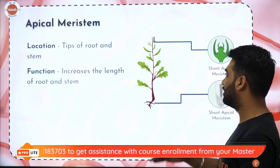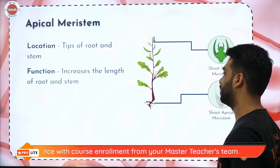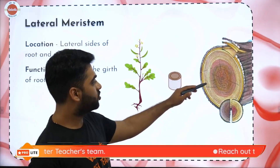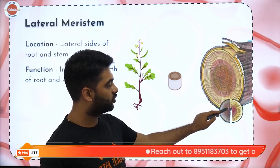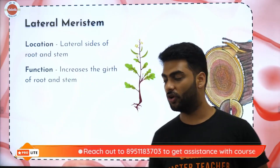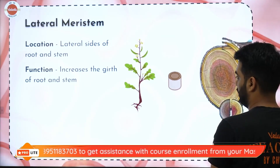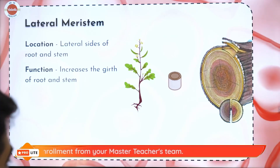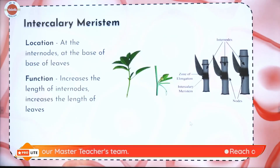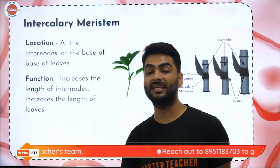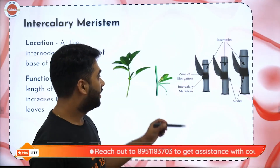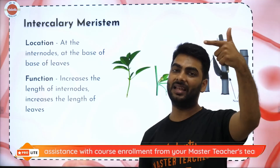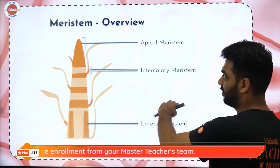Apical meristem is located at the tip of the root and the shoot — it increases the length of the root and the stem. Lateral meristem is on the lateral sides — it increases the girth of the root and the stem. The plant has grown wider because of lateral meristem. Intercalary is present between the nodes, at the internodes and at the base of the leaves — it increases the length of the internodes and increases the length of the leaves. So intercalary increases the growth of the leaf and the length of the nodes. Those are the three types of meristematic tissue: apical, lateral and intercalary.